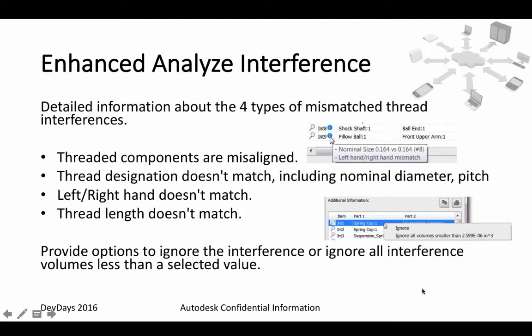In the user interface, four types of information will be provided: threaded components are misaligned, thread designation doesn't match, left-right hand doesn't match, or thread length doesn't match.